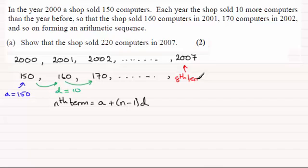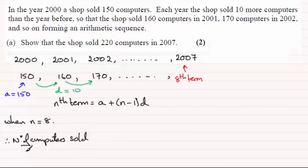In order to work out the 8th term, all I need to say is when n equals 8. Therefore the number of computers sold in 2007, that's going to be a, which is 150, plus n minus 1, so that's going to be 8 minus 1, times the common difference, which is 10. If you work that out, you end up with 220.